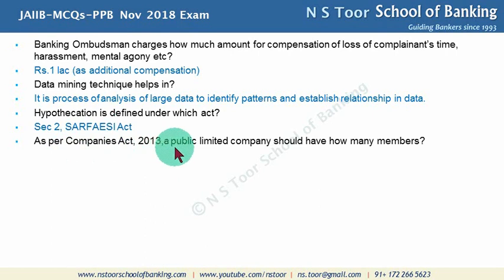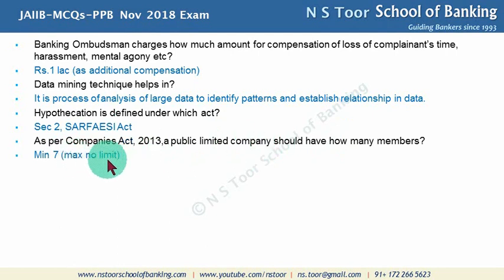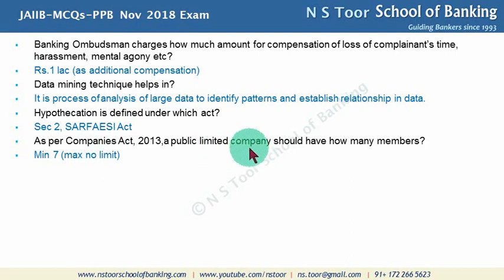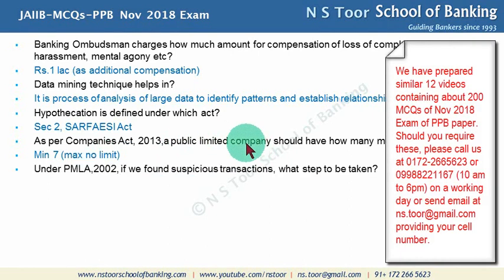According to the Companies Act 2013, a public limited company should have a minimum of 7 members and there is no maximum limit. In case of a private limited company, the minimum is 2 and the maximum is 200.